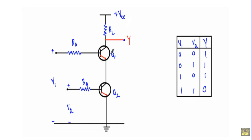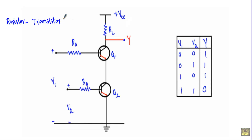In the circuit we have two transistors, Q1 and Q2. At the base terminal of Q1 and the base terminal of Q2, we have connected a base resistor RB. The circuit uses only resistors and transistors for its logical operation, which is why this is known as resistor-transistor logic.